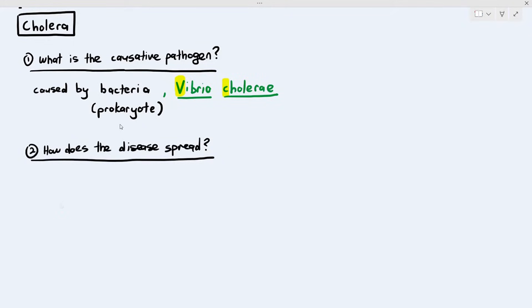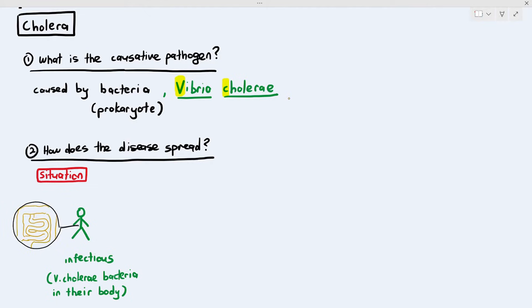Number two: we have to know how does the disease spread. Before we understand how the disease spreads, we have to look at an infectious person. The infectious person has the V. cholerae bacteria inside their body. You must know where the bacteria is actually located - inside the gut of the person. The gut is just the intestines, either the small intestine or the large intestine. So the question is, how does the V. cholerae bacteria spread from the infectious person to the non-infectious person?